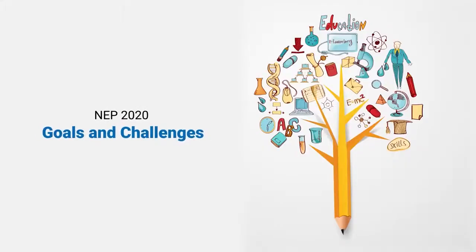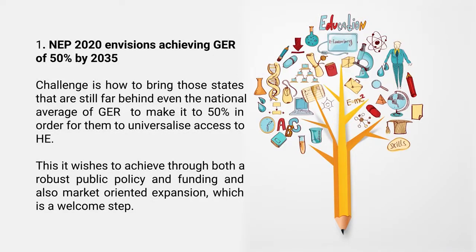Set in this broad background, how do we look at the NEP 2020 proposals and goals, and what challenges and opportunities are we going to confront? The first issue is that NEP 2020 envisions achieving a gross enrollment ratio of 50 percent by 2035 — that means in about 13 years we are expected to reach 50 percent from 27 percent where we are today. The challenge is how to bring states that are still far behind even the national average of gross enrollment ratio to make it to 50 percent in order to universalize access to higher education.